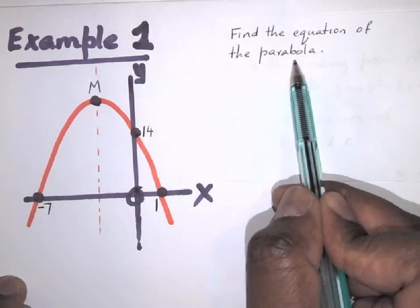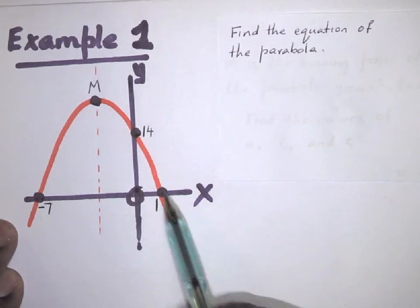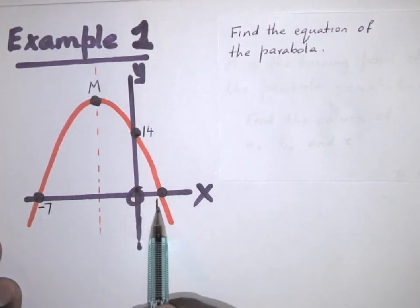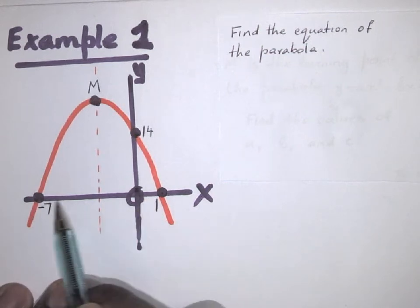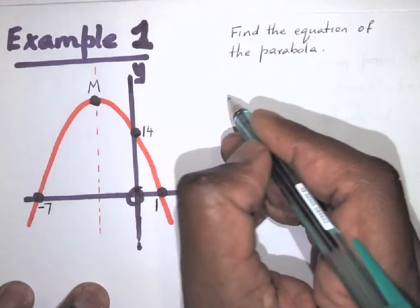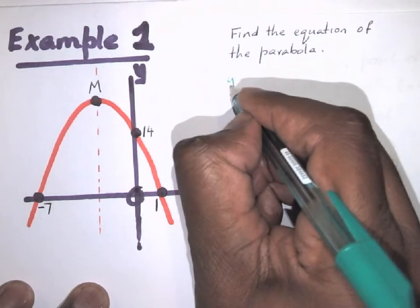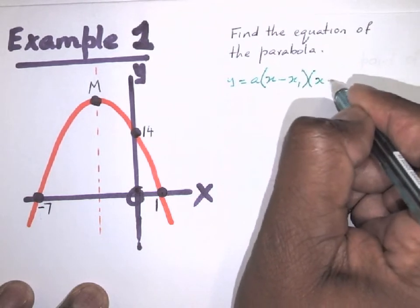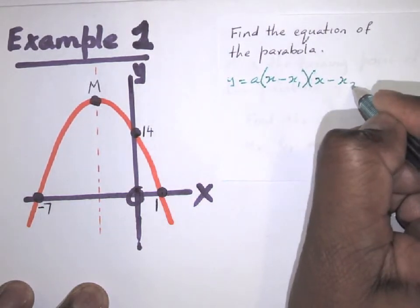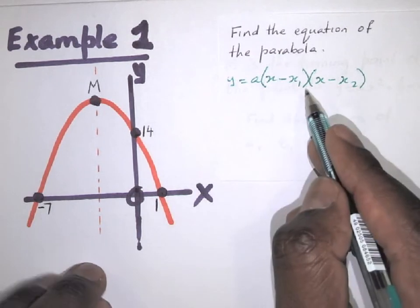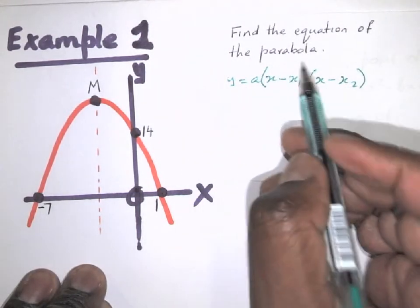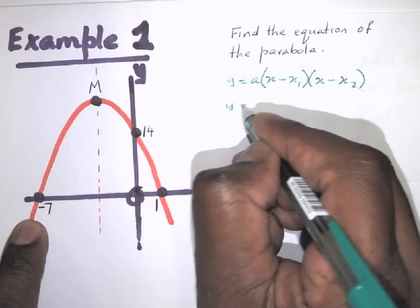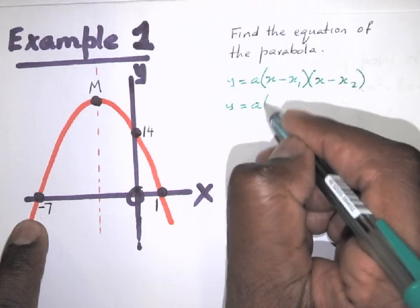Let's look at an example. Find the equation of the parabola. Here is our parabola and it cuts the x-axis at minus seven and at one. Since the graph cuts the x-axis we are going to use the formula y = a(x − x1)(x − x2). We always start with what we know, so we plug those values in.